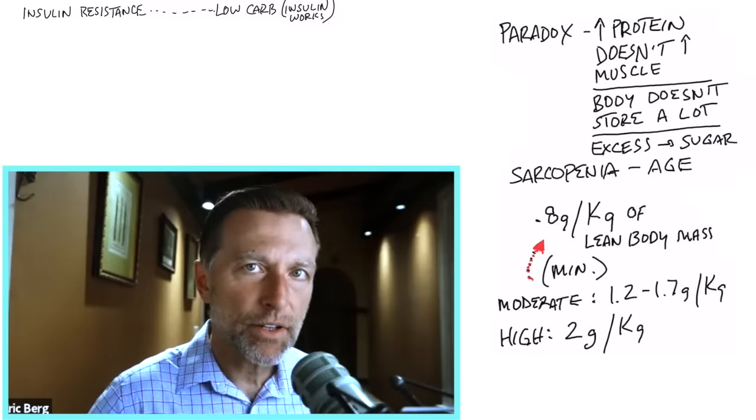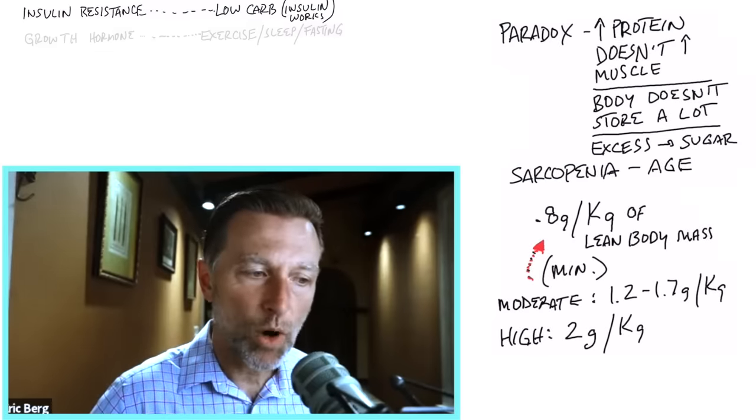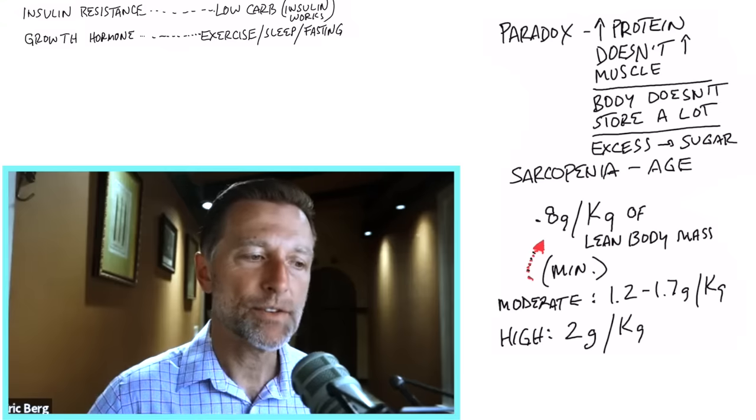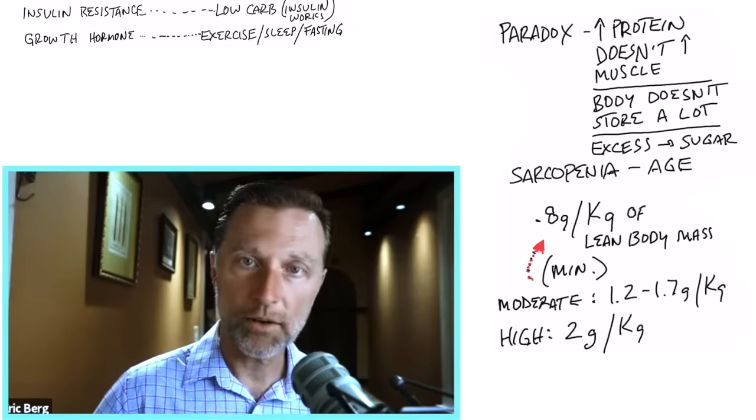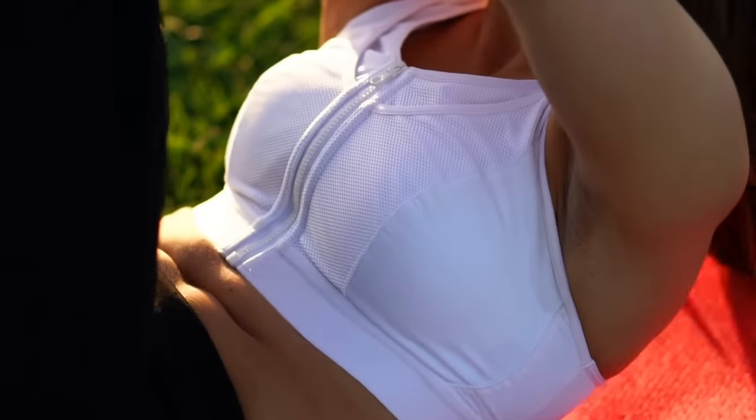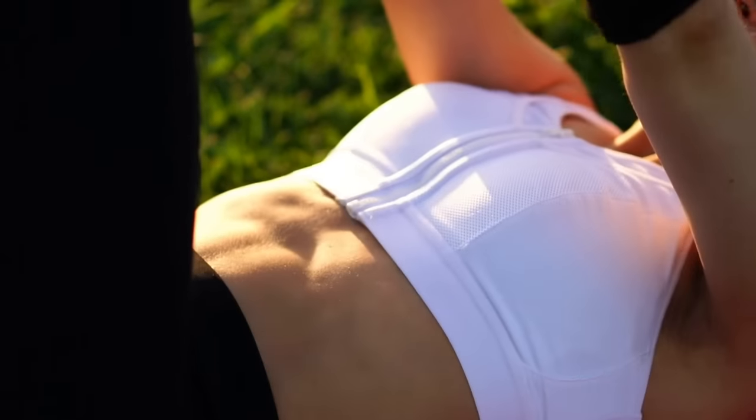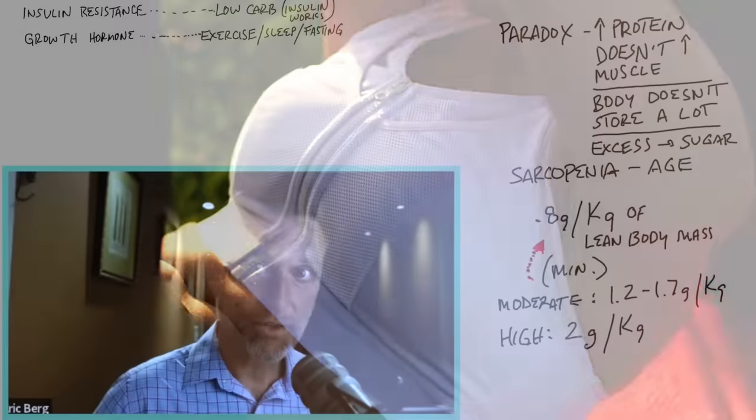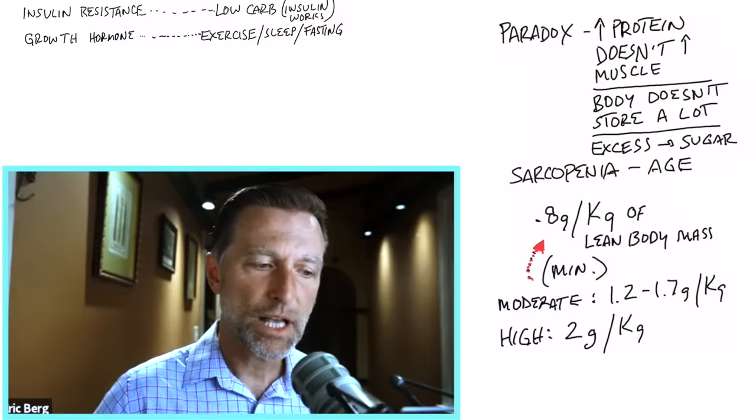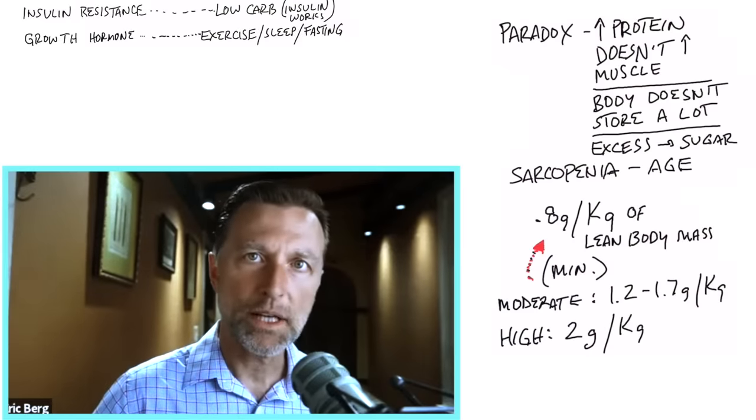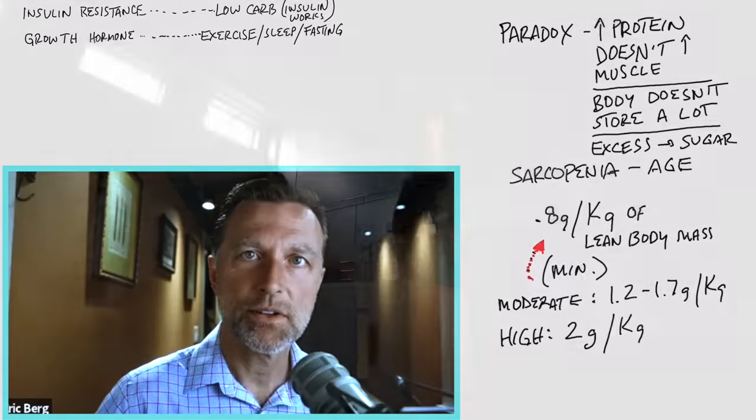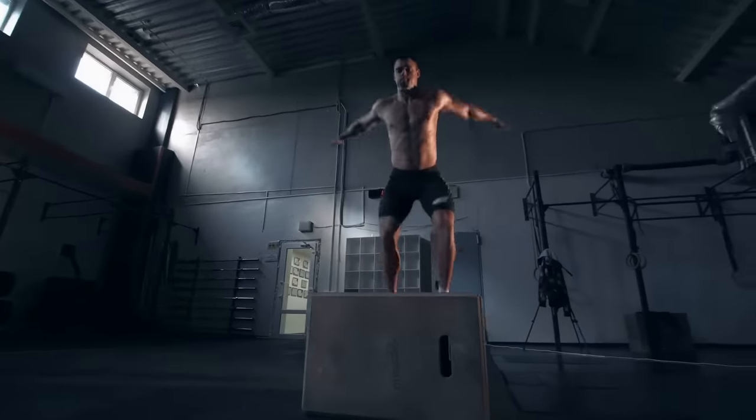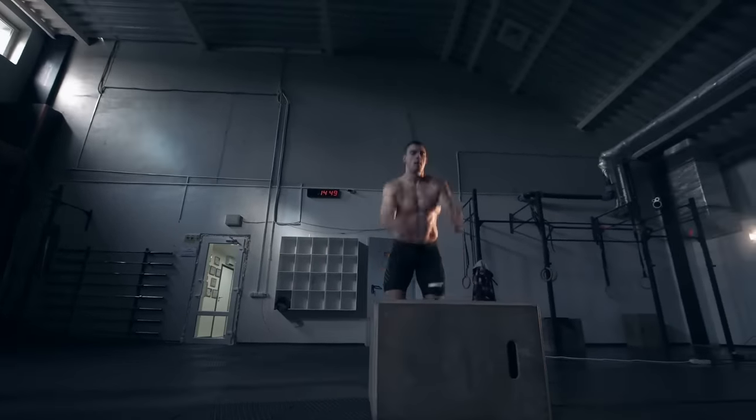The other factor involved with building muscles is growth hormone. And there are some things that you want to know about growth hormone. How do you first trigger growth hormone? Well, you can trigger it by intense exercise. So if you're trying to build muscle with just eating protein and not exercising, it's not going to work. Exercise is the most potent activator of muscle synthesis, especially intense exercise, as well as the volume of exercise too.